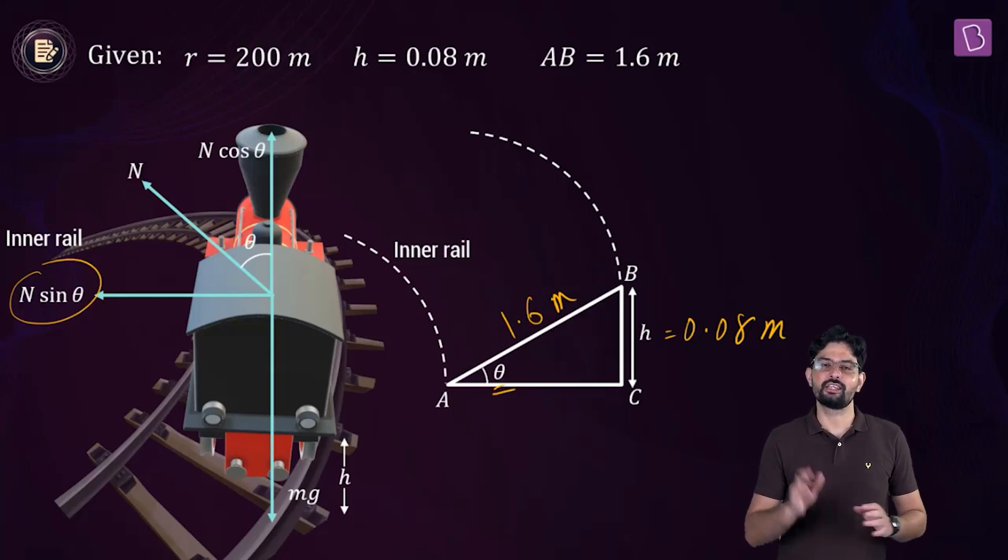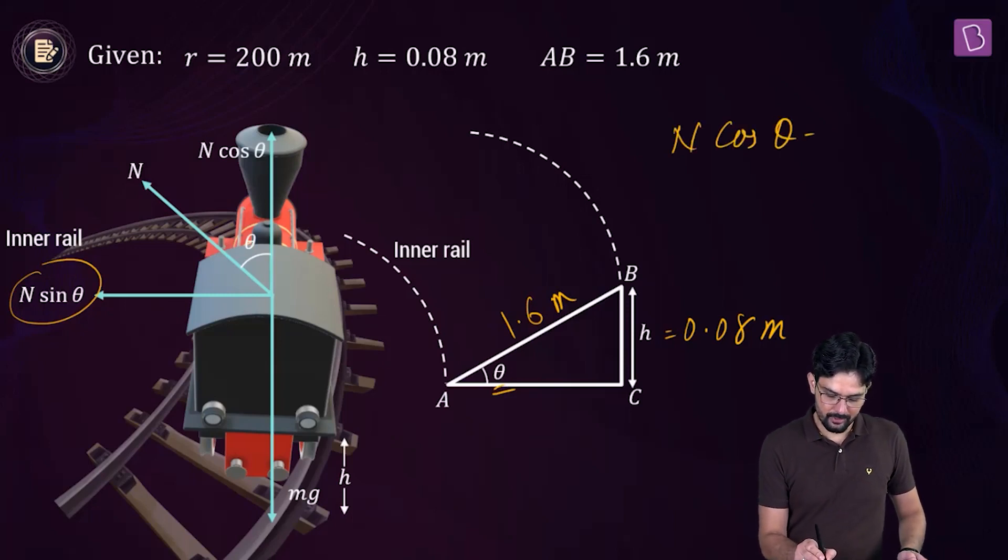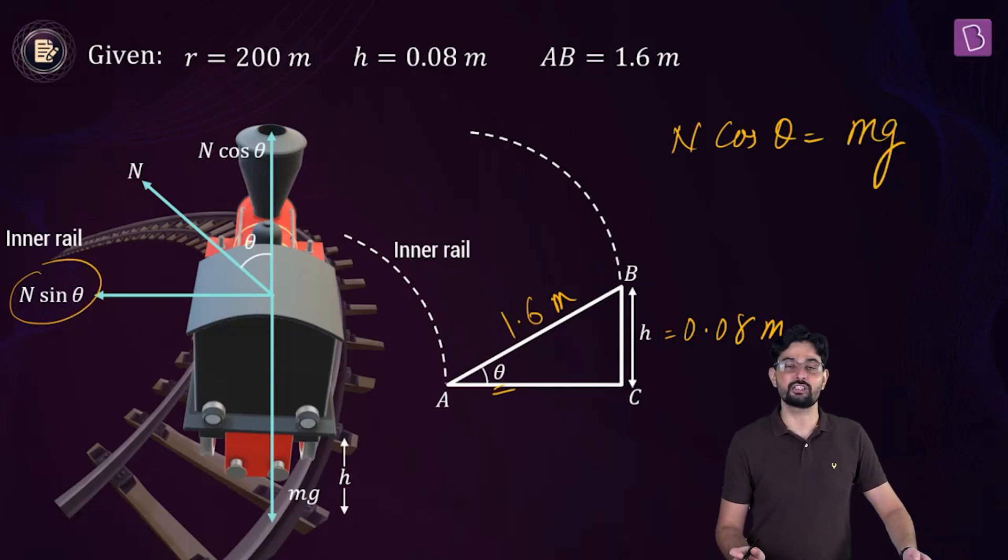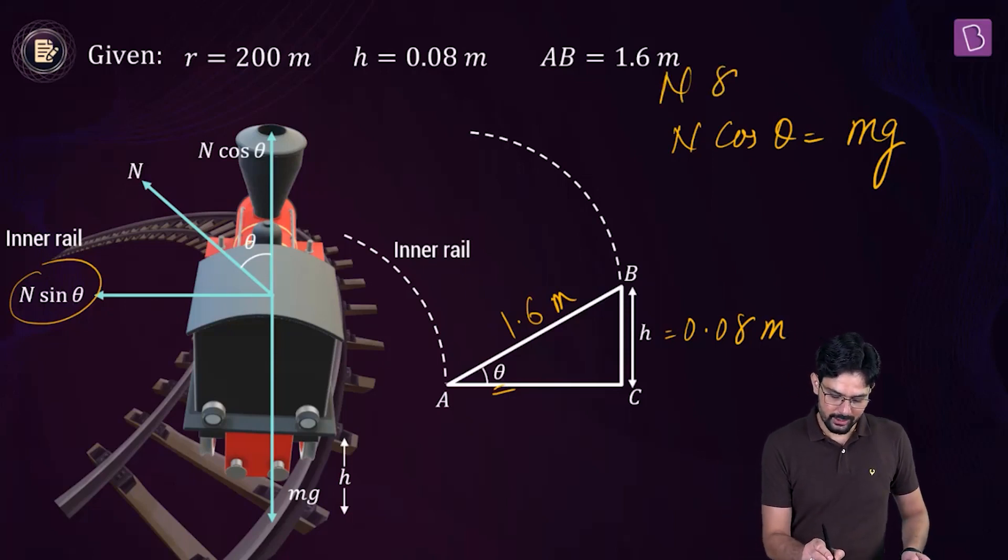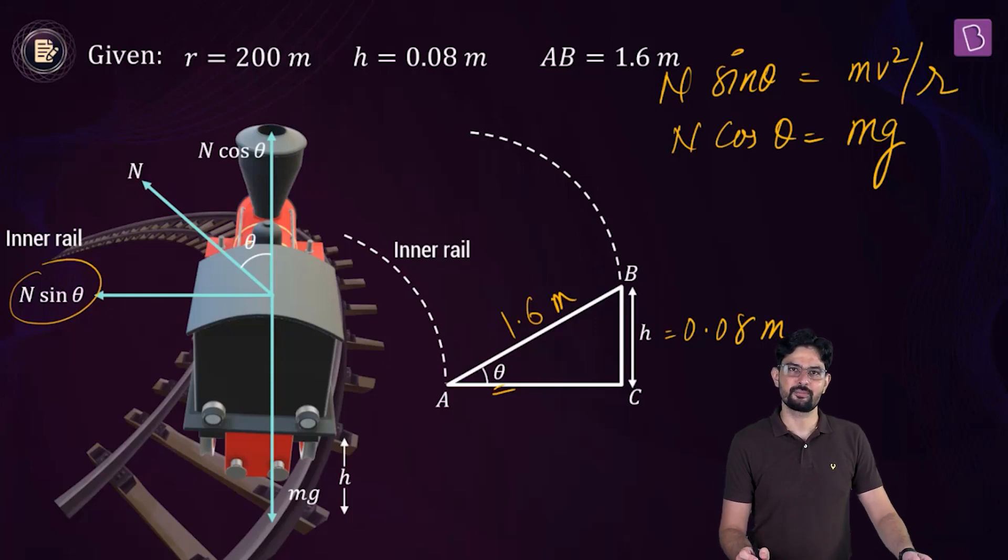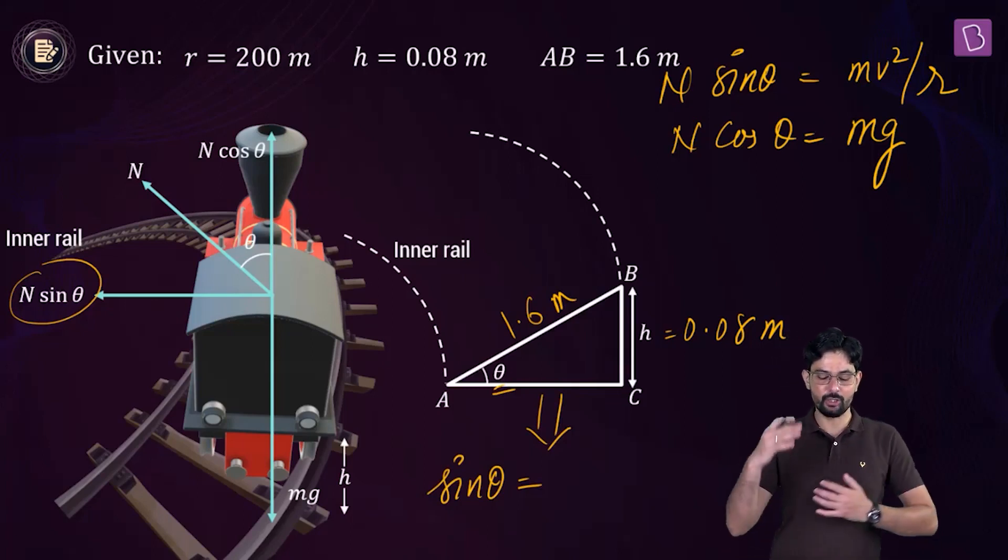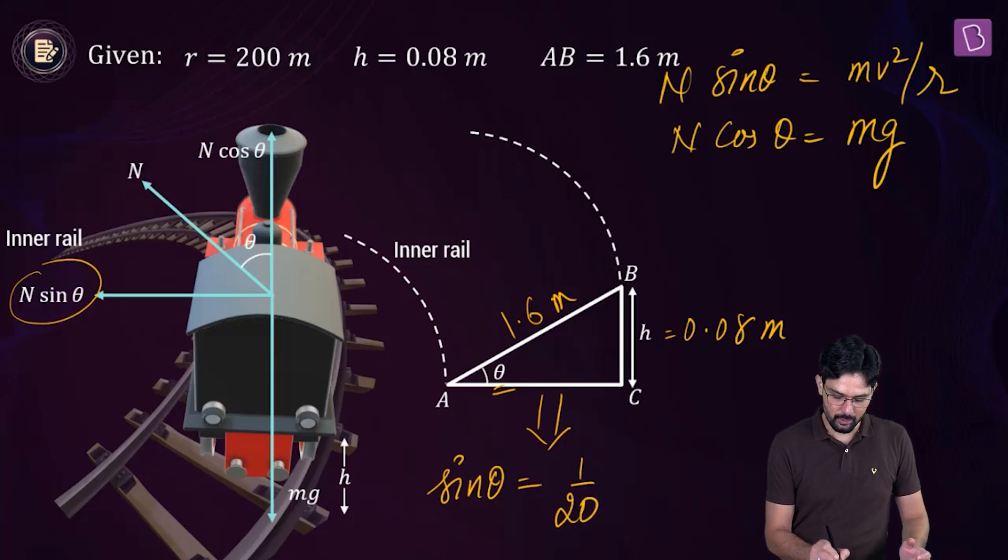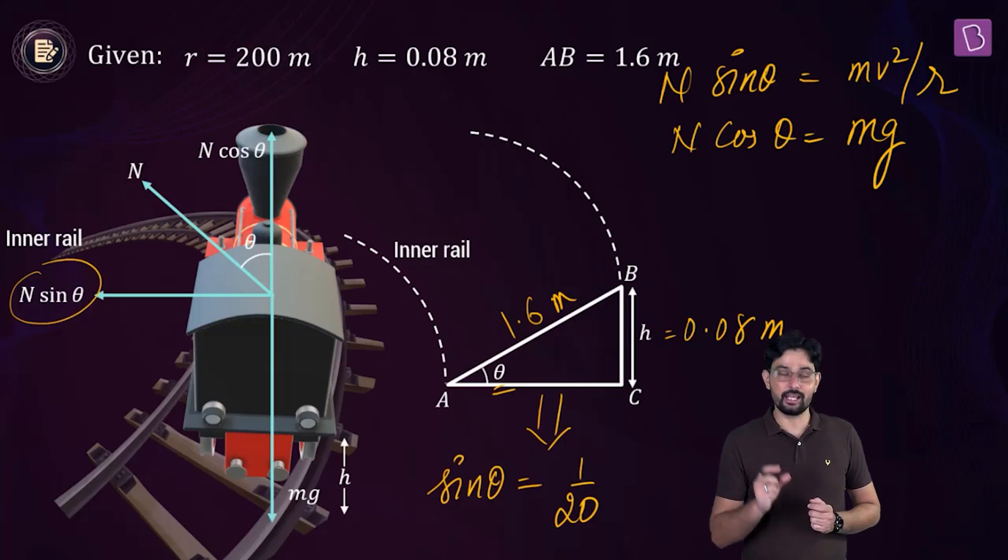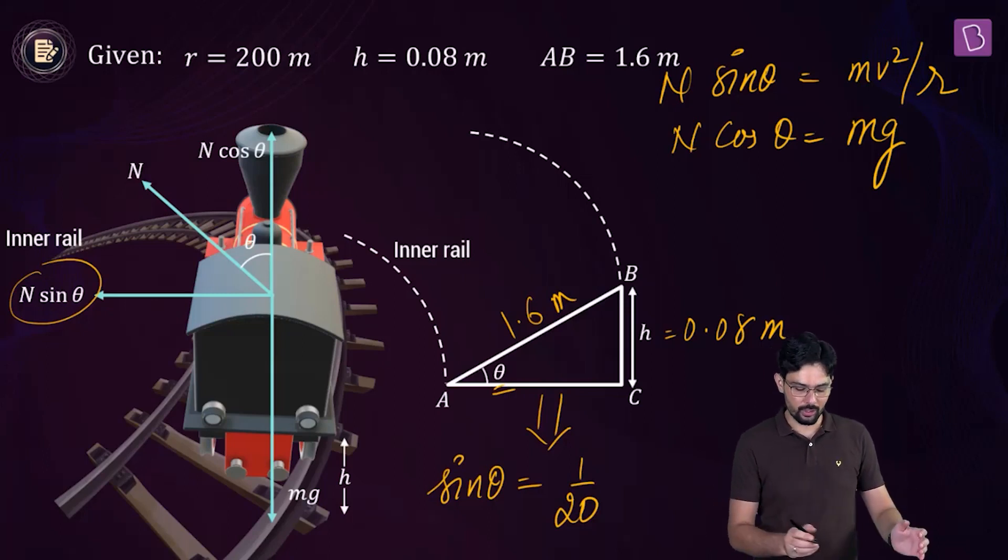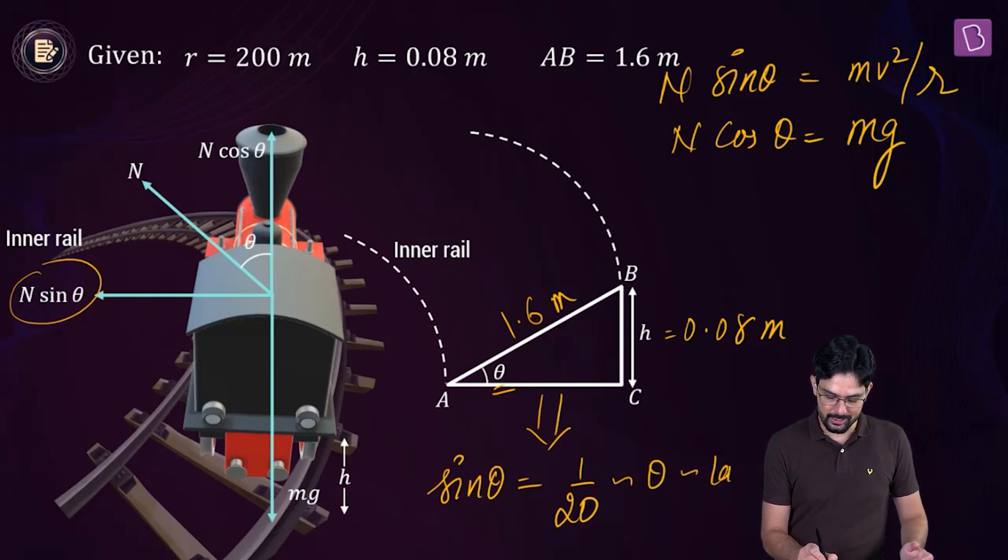So let's form the equations. In the perpendicular direction, the net force on the train is going to be 0, which means that N cos theta is m into g, where m obviously is the mass of this train. And in the horizontal direction, N sine theta will be equal to m v square by r. And from this, we can also see that the value of sine theta from here, which is perpendicular by hypotenuse is 0.08 divided by 1.6, which is 1 by 20. And the value of sine theta is pretty small, so you can approximate it to theta, which further you can approximate to tan theta. Remember, how the approximation works for smaller angles.